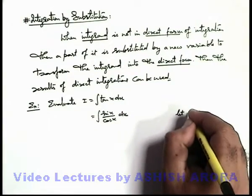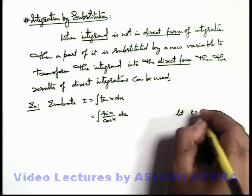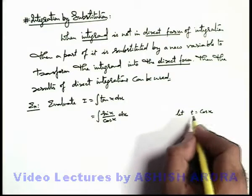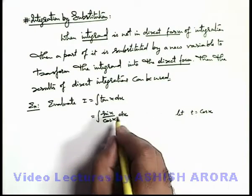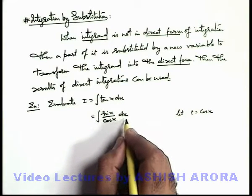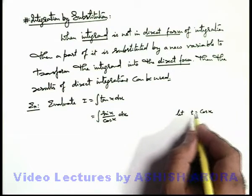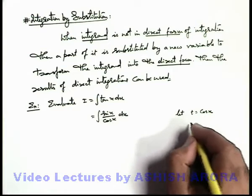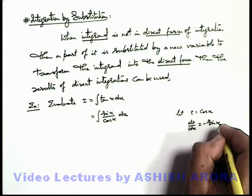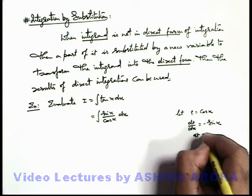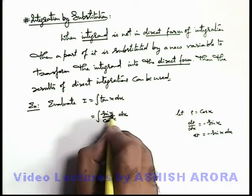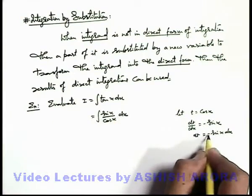What we do now: we just take let t equal to cos(x). Here a part of the integrand, cos(x), we substitute by a new variable t. Now we'll try to convert the whole integrand as well as the variable with respect to which we are integrating, in terms of t. If t equals cos(x), we differentiate to get dt/dx equal to minus sin(x), so dt equals minus sin(x) dx.